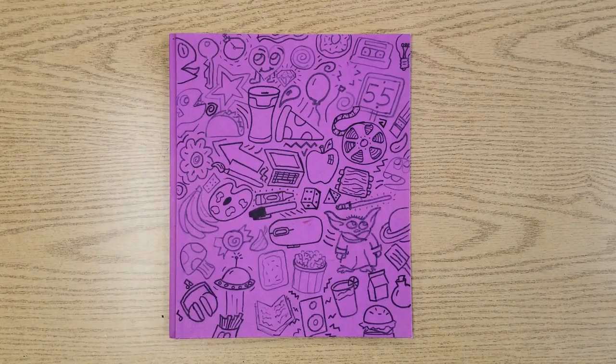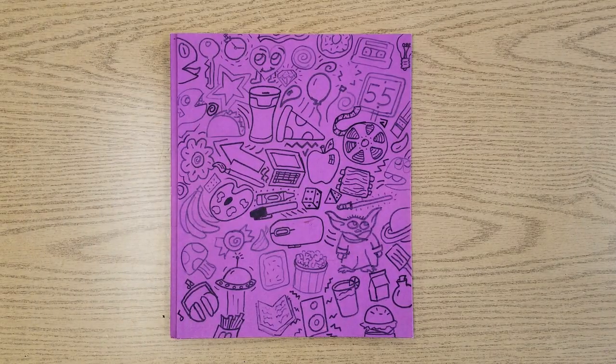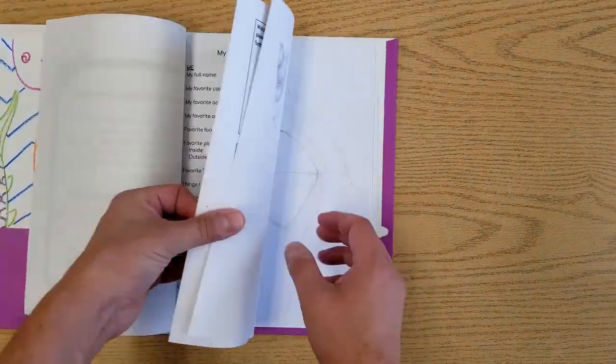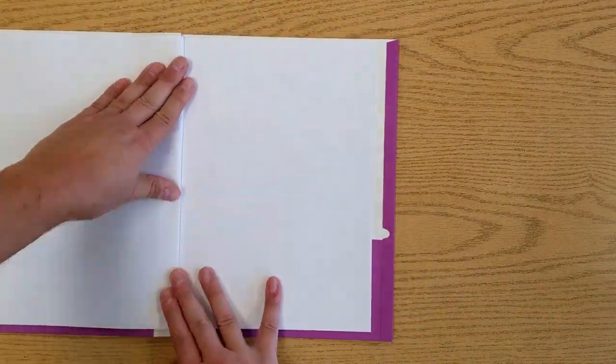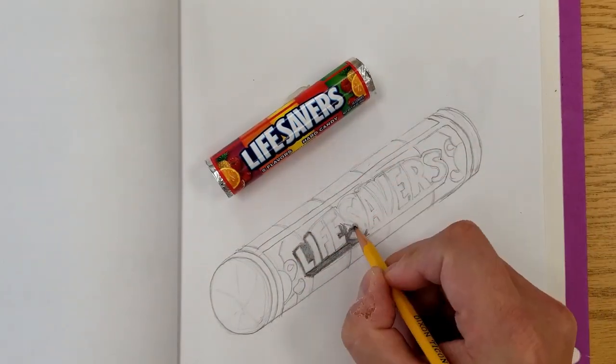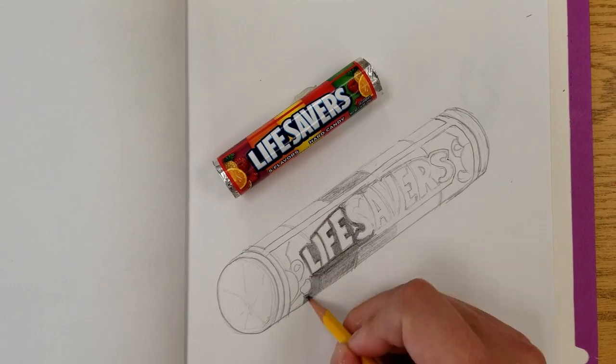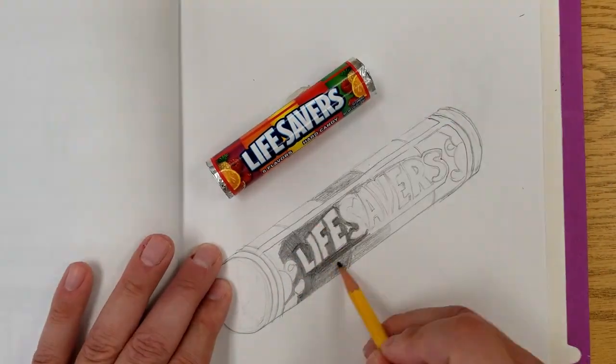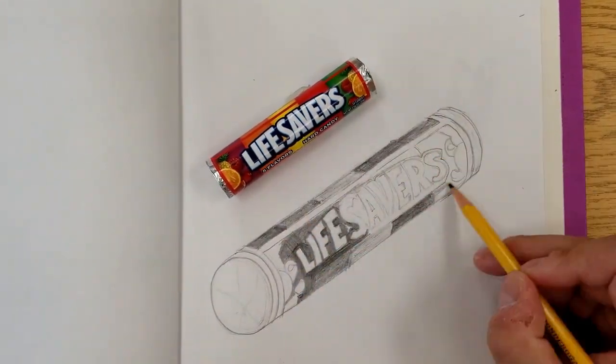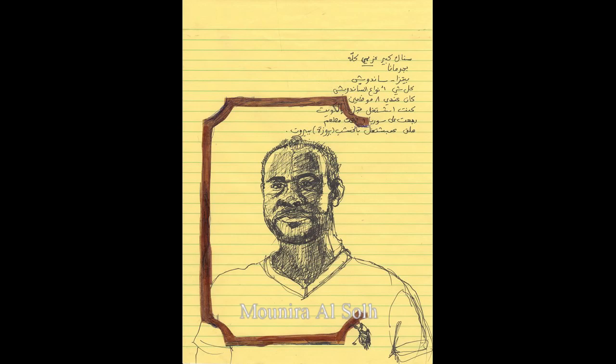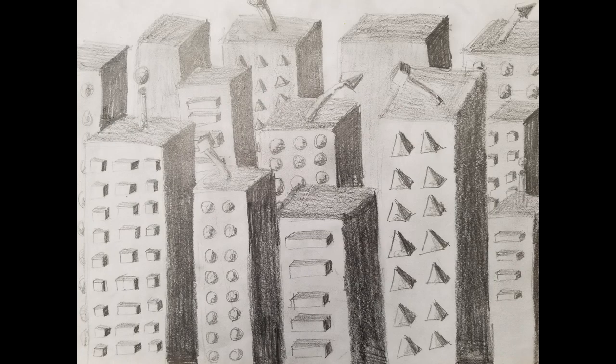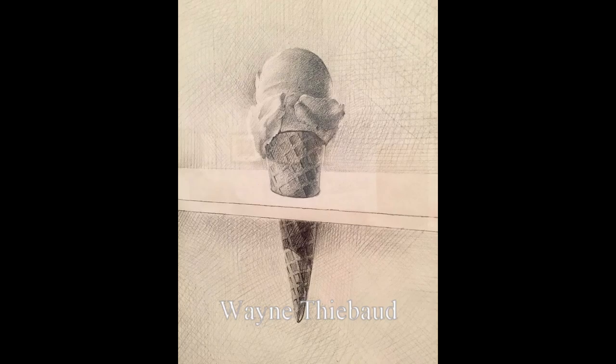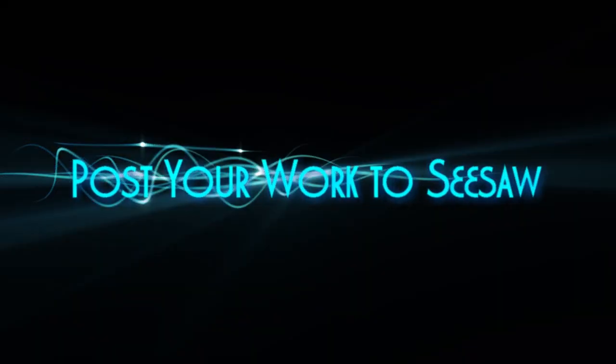And now we're going to put those new skills to work. Get out your sketchbook and turn to a blank page, or grab a blank sheet of paper from your art teacher. Start thinking about what you want to draw. Spot the light colors and convert them into light values. Do the same for the dark colors, converting them into dark values. You might choose to do a portrait, or a landscape, or cityscape. Maybe a treat that you enjoy. When you're done, remember to post it to Seesaw so your art teachers can see what you created.